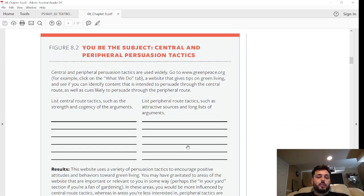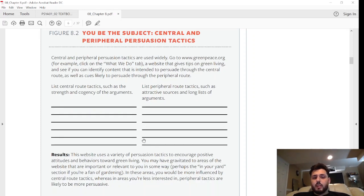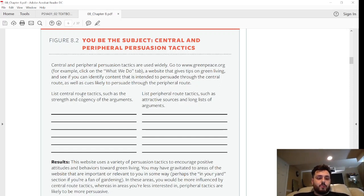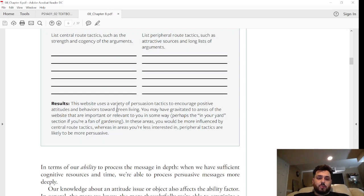Here's a great example: you be the subject—central and peripheral persuasion tactics are used widely. If you go to the greenpeace.org website, it's a website that gives tips on green living. See if you can identify content that is intended to persuade through the central route, as well as cues likely to persuade through the peripheral route. This is a great example, and whoever's watching this video, if you want to partake in this, you can list central route tactics and peripheral route tactics to kind of test if you can see what greenpeace.org is doing. The results are also listed here, but we won't go through it obviously because you have to actually go through the activity.